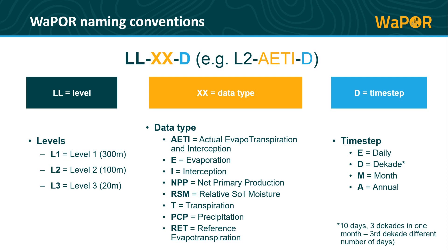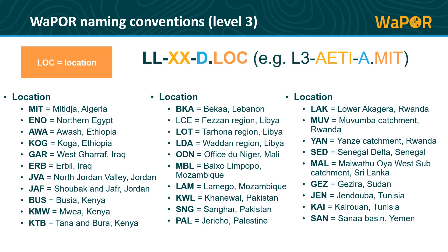The last part of the name relates to the time step of the data. Finally, for the Level 3 data, the name of the location is also included in each of the file names. At the moment, there are 30 areas with high resolution data, and each location has a specific three-letter indicator.